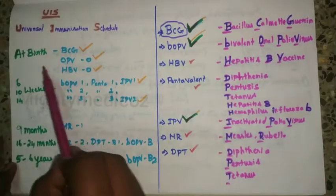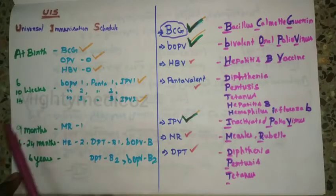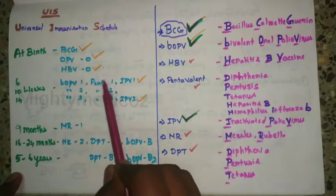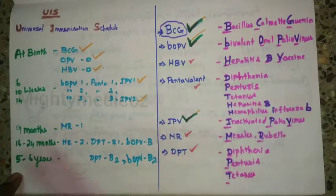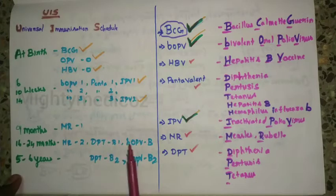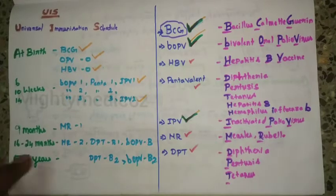As a quick recap of the universal immunization schedule: at birth, BCG, OPV, and HBV vaccine. At 6-10-14 weeks, bivalent OPV, pentavalent at 3 months, 6 weeks, and 14th week, along with IPV. In the 9th month, first dose of MR. At 16-24 months, second dose of MR along with DPT first booster and OPV first booster.